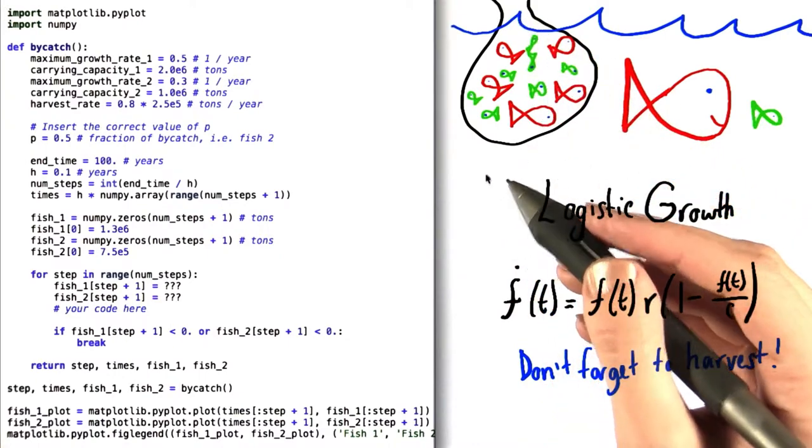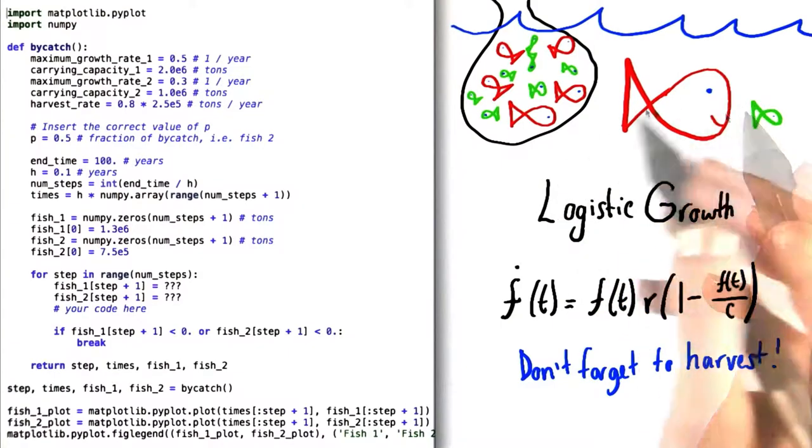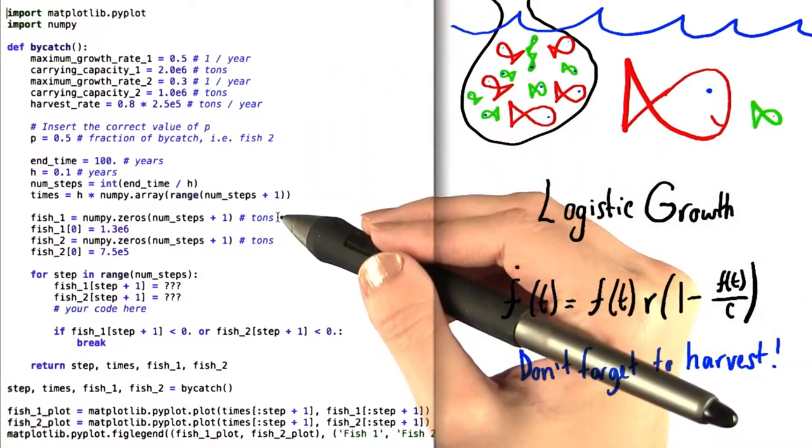What we're going to do in this problem is model logistic growth for both species of fish, the red and the green, with the constants and the initial values that we've already included in the supplied code.